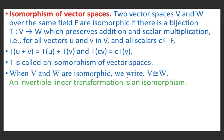When V and W are isomorphic, we write V is isomorphic to W. An invertible linear transformation is an isomorphism because a transformation is invertible if and only if it is one-one and onto. About linear transformations we have studied in the previous lecture.